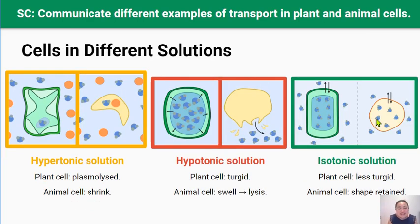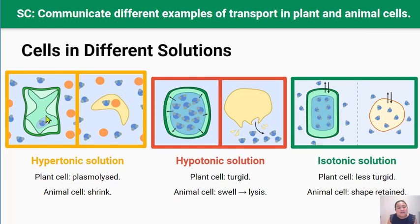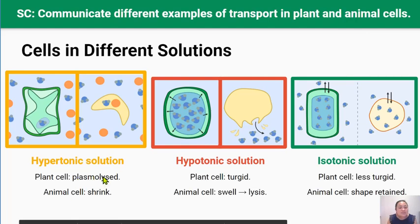So what actually happens to cells when they're put into these three different solutions? If the environment outside of the plant or animal cell is hypertonic, they will quickly lose water, because the water concentration is highest inside the cell. Water will move down the concentration gradient out of the cell and into the extracellular environment. This will cause animal cells to shrink, and it will cause plant cells to become flaccid or limp. In plant cells, this water loss can cause the cell membrane to pull away from the cell wall — we say the cell becomes plasmolyzed — and this will cause the plant to wilt.